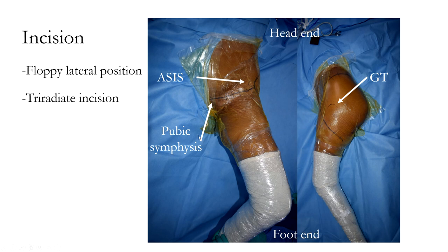The planned line of incisions was marked with the patient in right floppy lateral position. A tri-radiate incision was planned, extending from the pubic symphysis up to the anterior superior iliac spine, with the superior limb running along the iliac crest and the inferior limb coming down over the anterior and lateral aspect of the thigh. The horizontal incision constituted the ilioinguinal approach and the lower aspect of the vertical incision constituted the iliofemoral approach.